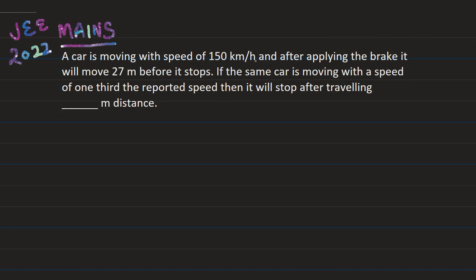A car is moving with a speed of 150 km per hour and after applying the brake, it moves 27 meters before it stops. If the same car is moving with a speed of one-third the reported speed (one-third of 150 km per hour), then it will stop after traveling how many meters distance? It is an integer type question with two conditions.